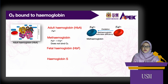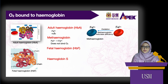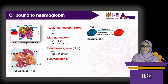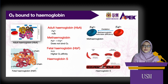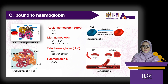In fetal hemoglobin, the two beta chains are replaced by two gamma chains. Because of this, fetal hemoglobin has a higher affinity for oxygen compared to adult hemoglobin, which makes oxygen movement from the mother to the fetus easier. Fetal hemoglobin is slowly replaced by adult hemoglobin within the first year of life. Hemoglobin S is an abnormal hemoglobin that causes sickle cell disease. In hemoglobin S, the alpha chains are normal but the beta chains are not. The deoxygenated hemoglobin S has an abnormal sickle shape which can cause occlusion of small blood vessels, and hemoglobin S has lower affinity for oxygen compared to adult hemoglobin.